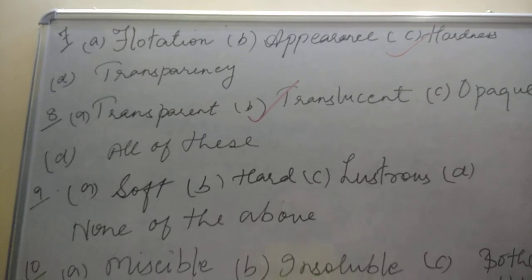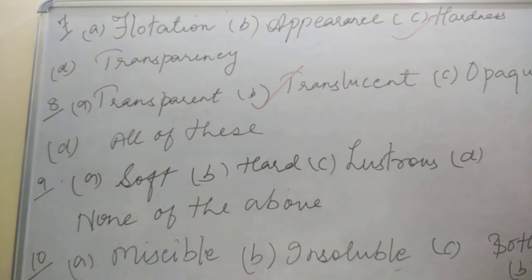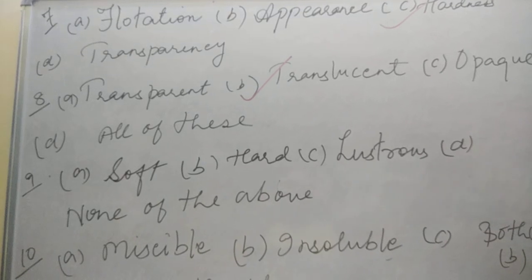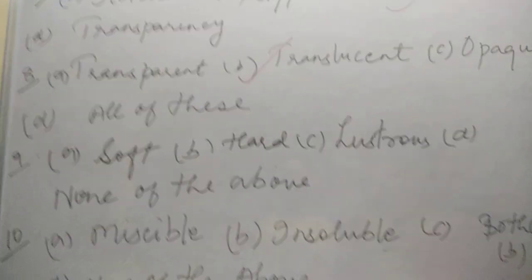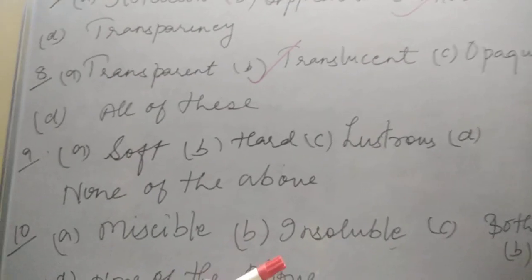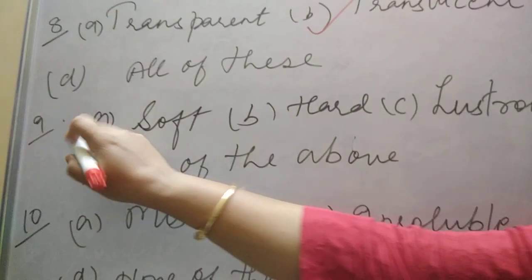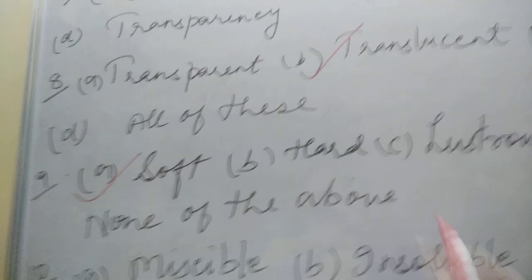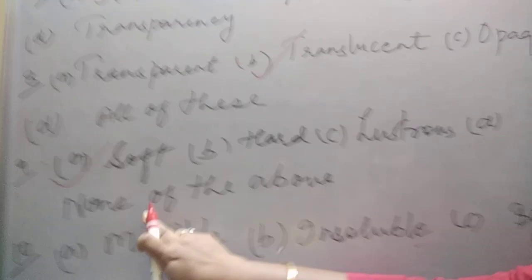Now the ninth question says, materials which can be compressed. Compressed means, kaun se materials ko daba sakte ho? Which can be easily compressed. Definitely, easily compressed means the material has to be soft. So option should be A, soft, not hard, not lustrous, not none of the above.